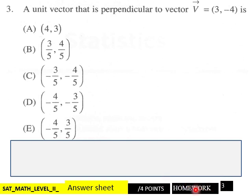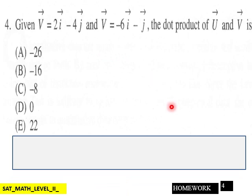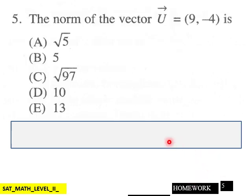Number four: given this situation here, the dot product of vector U and vector V is which one of these? Four points here for page four, page five.